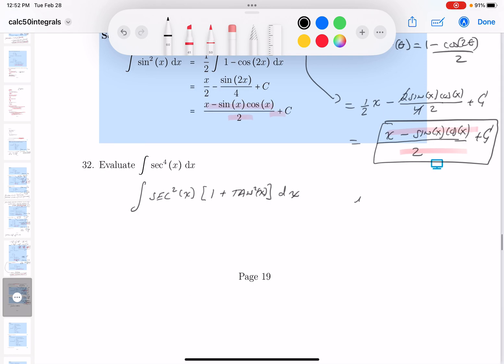I'm going to say u is equal to tangent of x. This is a u-substitution now. And du would equal secant squared x dx.